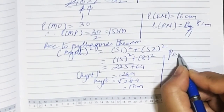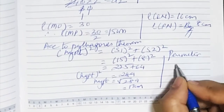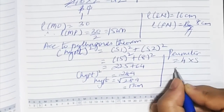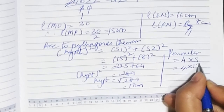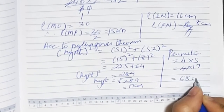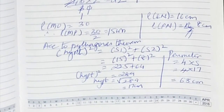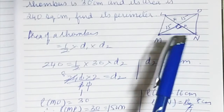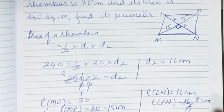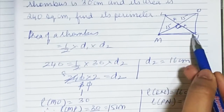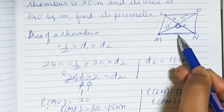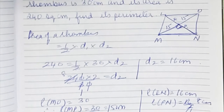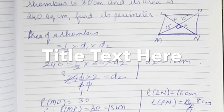Since one side is 17, the perimeter is 4 into 17, which is 68. So 68 centimetres is the perimeter of the rhombus. To summarise: we found d2 from the area formula, halved both diagonals, used Pythagoras theorem to find the hypotenuse (one side), then multiplied by 4 to get the perimeter. That is the end of exercise 15.2.